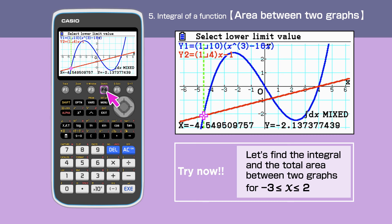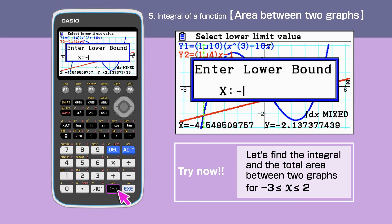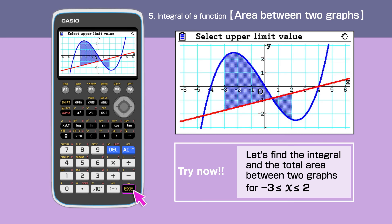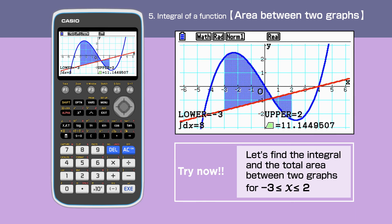Enter F4 mixed, then minus 3 for lower bound, 2 for upper bound. Once again, the area is highlighted and the value is calculated.